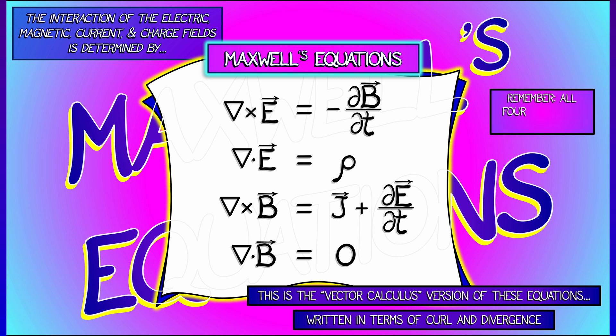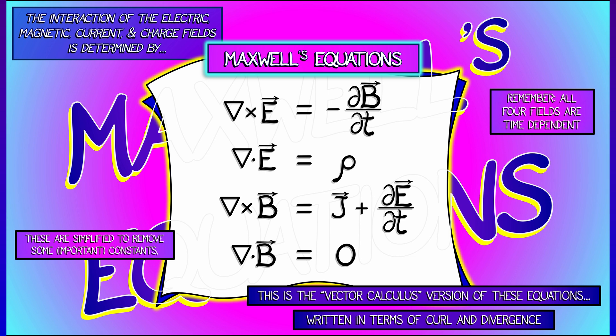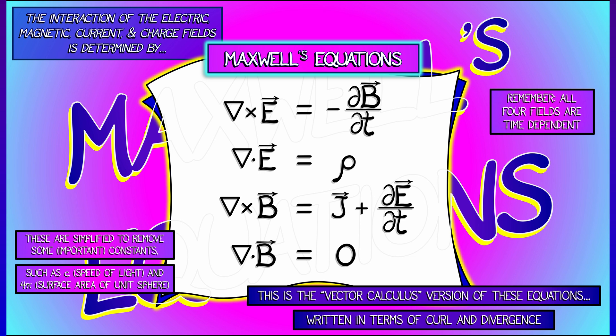Keep in mind that all four of these fields are time dependent, so everything could be changing over time — it's really complicated. And as complicated as this appears, I have to tell you I've simplified things. I've removed some of the important constants, like the speed of light, the surface area of a unit sphere, or other physical constants that depend on the medium. So be careful: if you're going to use Maxwell's equations for real, you'll need to read a book or two and be very careful. But in this simplified model, there's still a lot of cool stuff going on.